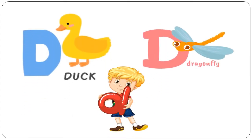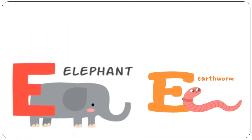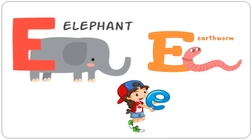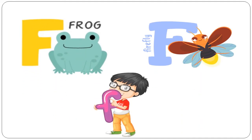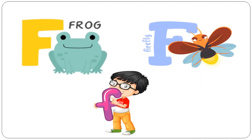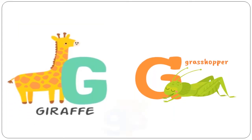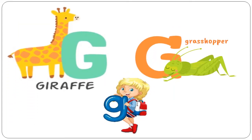D is for Dragonfly. E is for Elephant. E is for Earthworm. F is for Frog. F is for Firefly. G is for Giraffe. G is for Grasshopper.